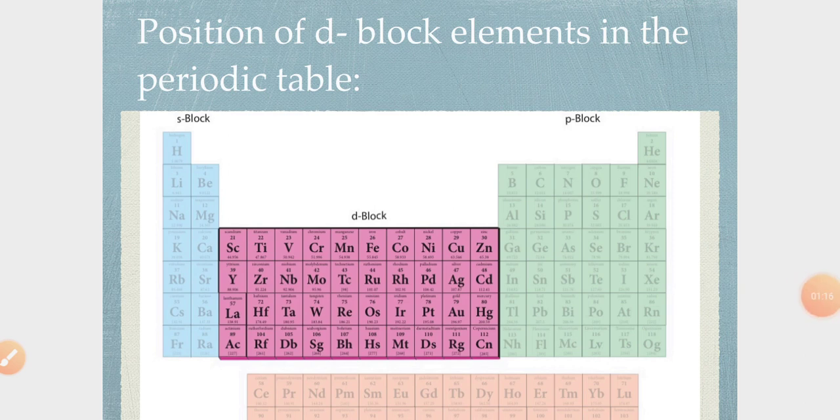Now, in the table, the elements of d-block elements are 4 kinds: fourth, fifth period, sixth period, seventh period. The four periods, the first period series, we will say 3D series. In the 3D series, the electrons will add. 21 to 30, the electrons will add.